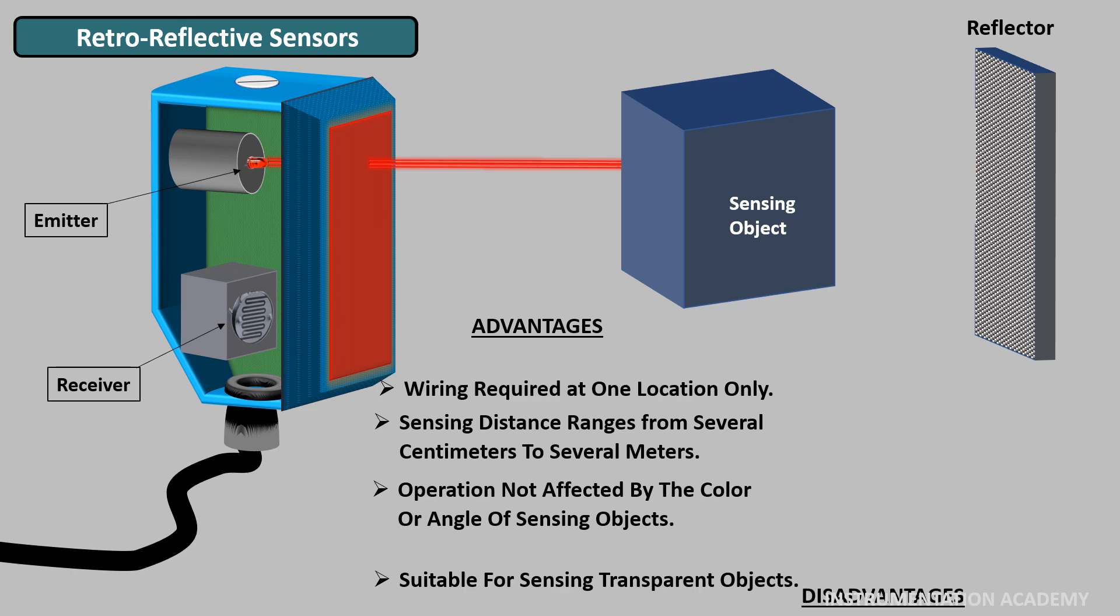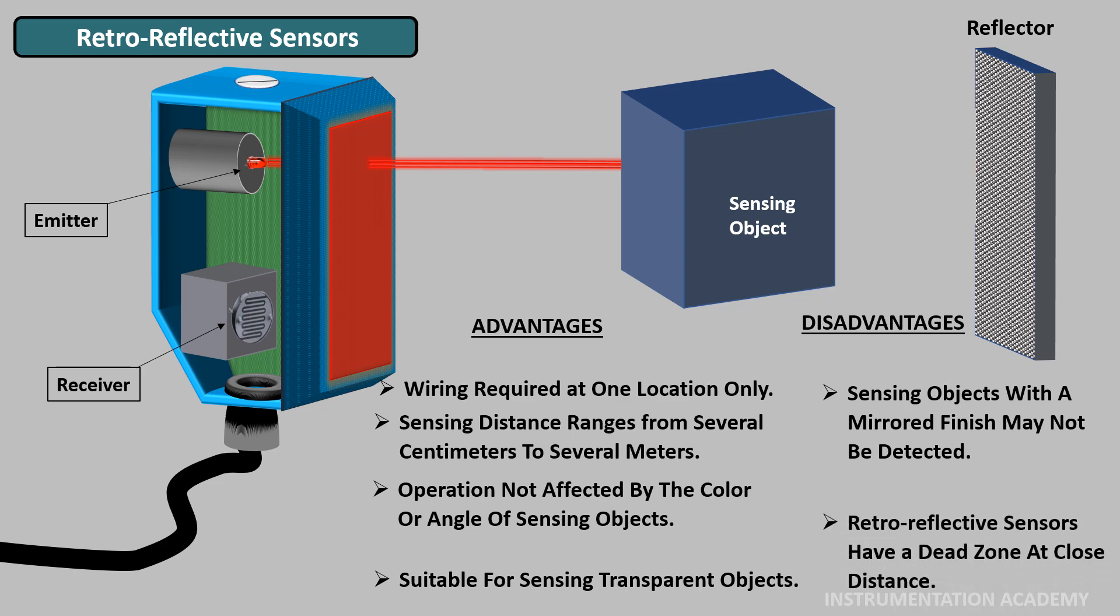Disadvantages of retro reflective sensors: Sensing objects with a mirrored finish may not be detected because the amount of light reflected back to the receiver from such shiny surfaces makes it appear as though no sensing object is present. Retro reflective sensors have a dead zone at close distance.